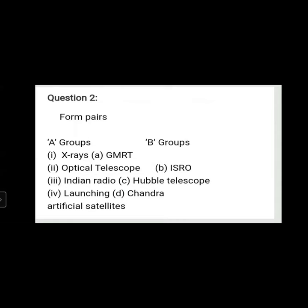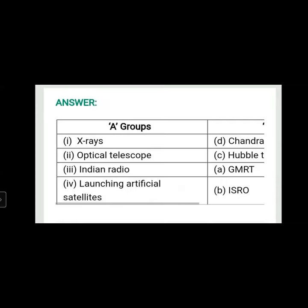Group A and Group B is given: X-rays, Optical Telescope, Indian Radio Telescope, Launching Artificial Satellites. And in Group B: GMRT, ISRO, Hubble Telescope, and Chandra. It's very easy — all of this we have studied.